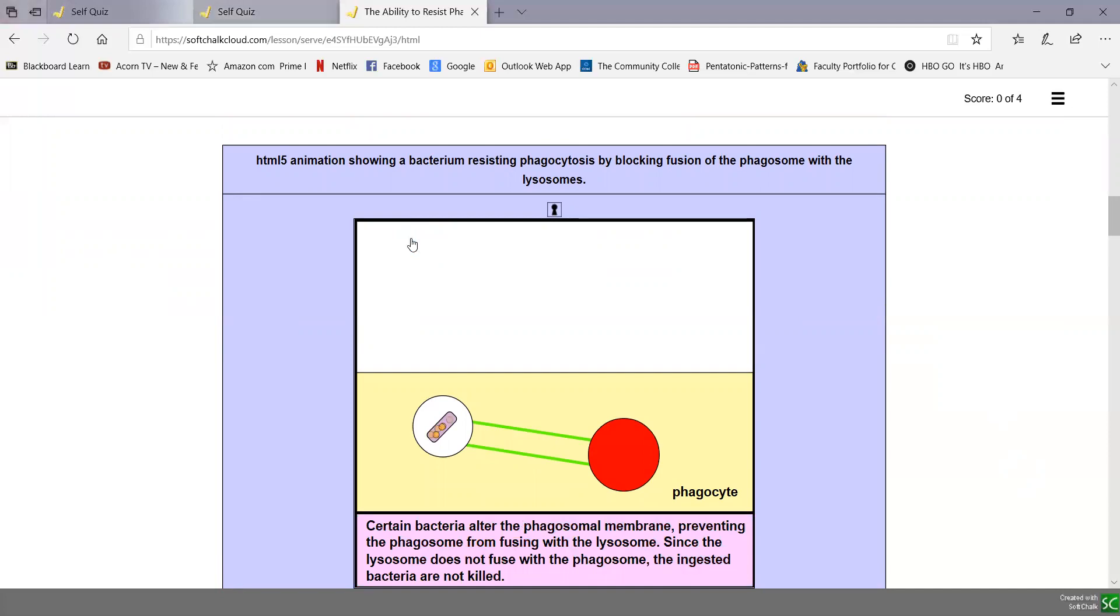Some bacteria can produce molecules, typically with this secretion system, that prevent the lysosome from ever fusing with the phagosome. As a result, the killing chemicals are never dumped on the bacteria, and the phagocyte is now a safe haven for bacterial replication.